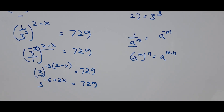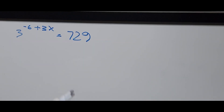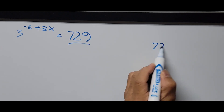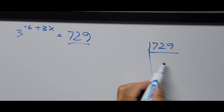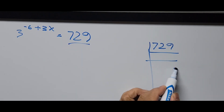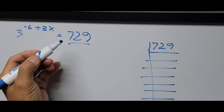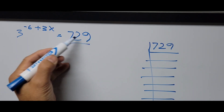Next, we focus our attention on the right side of the equation — the constant 729. We're going to find the factors of 729. If you add the digits: 7 plus 2 is 9, plus 9 is 18. That means 729 is divisible by 3.